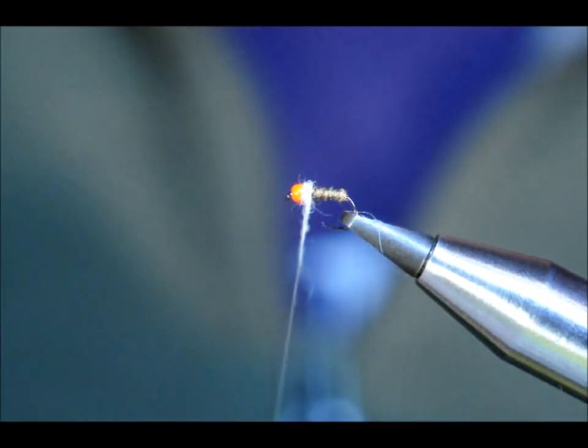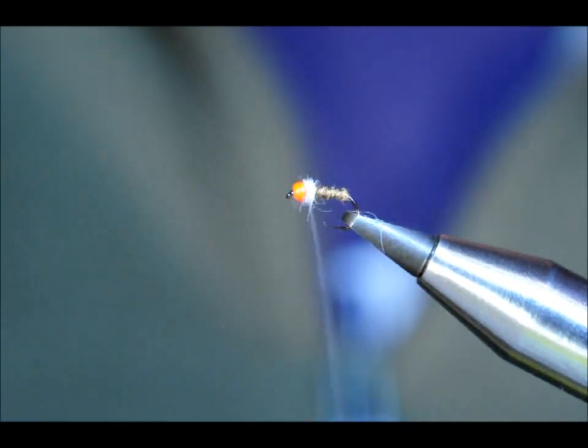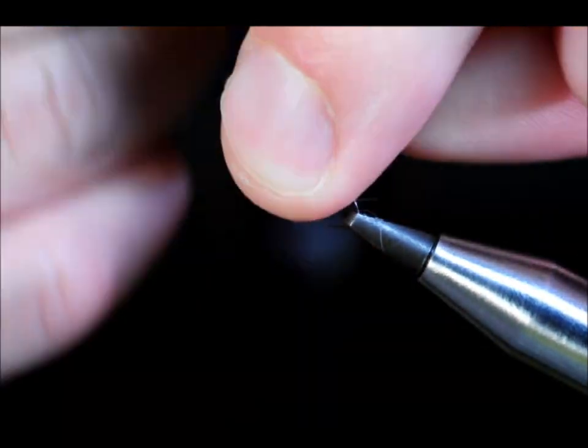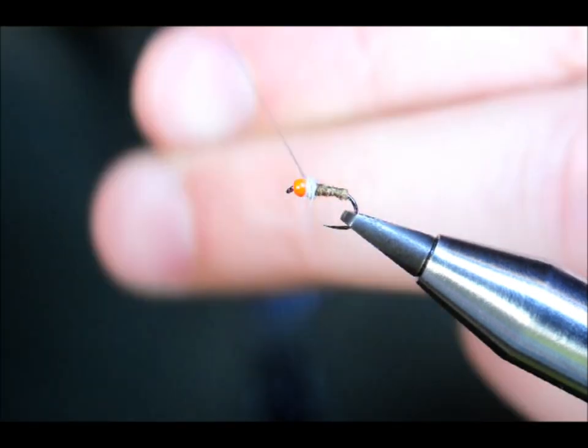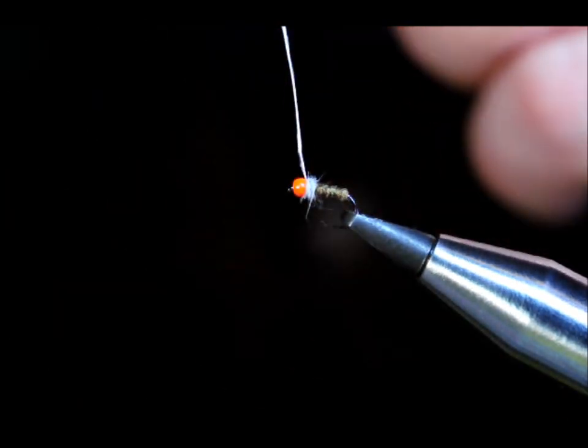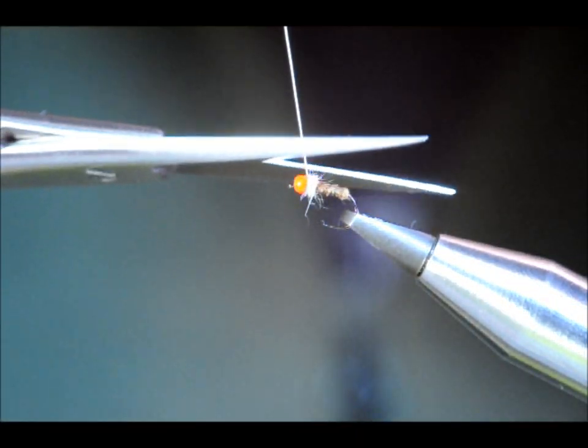And take it two turns. Two or three turns till the whole thing is on. Then simply, a couple of half hitches to finish off. Lock it into place. Then I can trim away the thread.